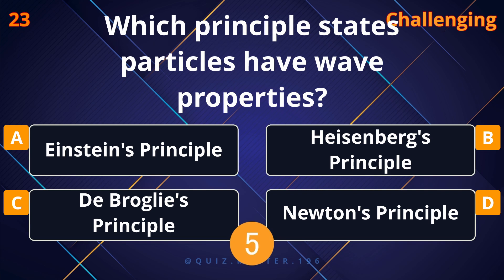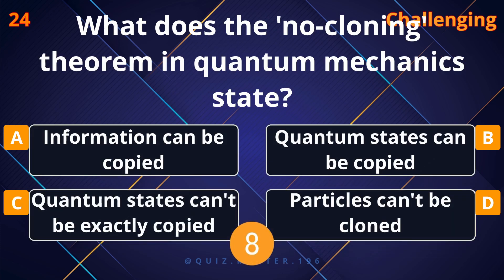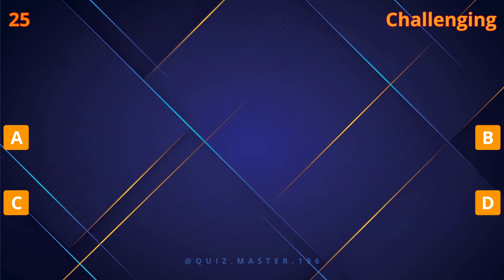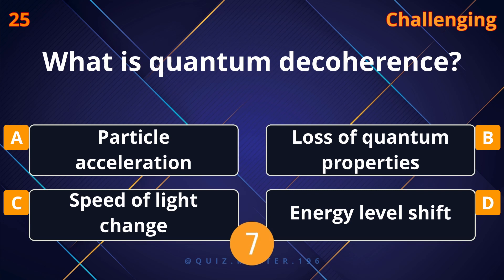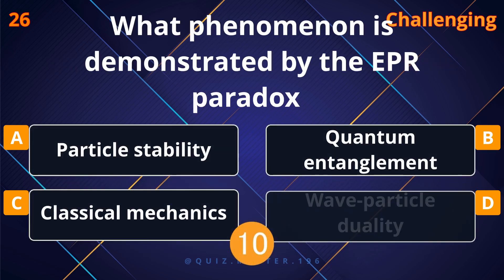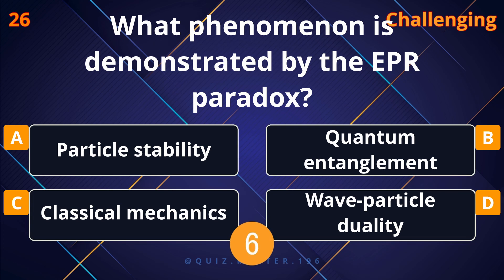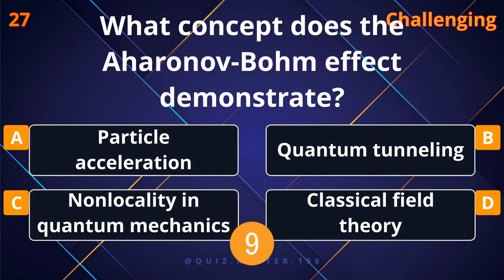Which principle states particles have wave properties? Quantum states can't be exactly copied. What is quantum decoherence? Loss of quantum properties. What phenomenon is demonstrated by the EPR paradox? Quantum entanglement.